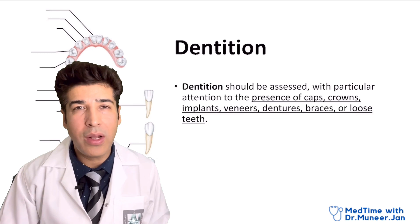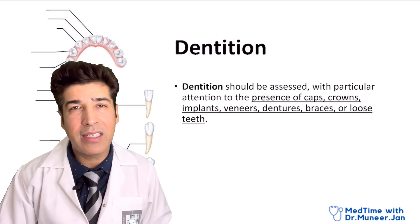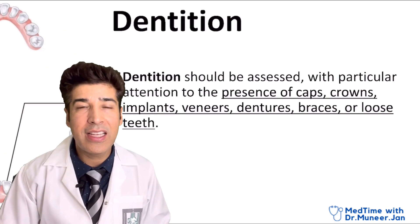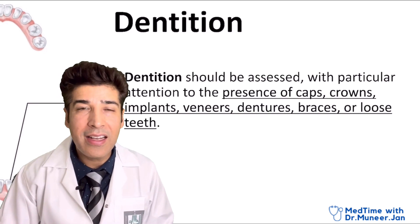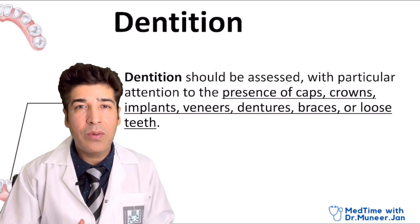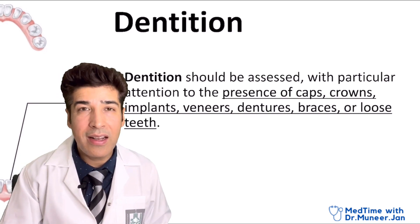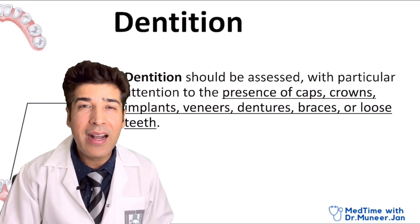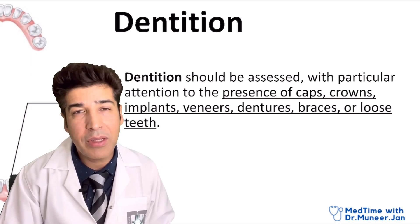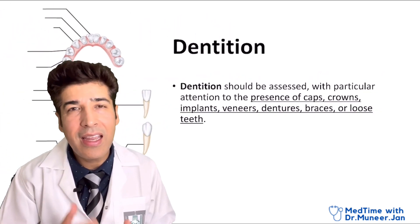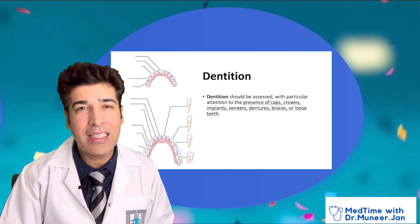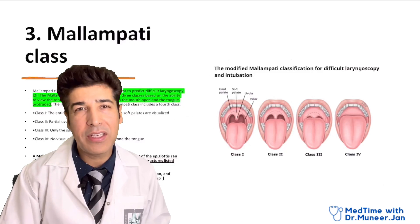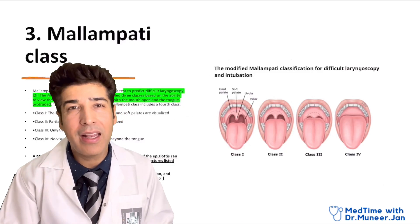Next, assess the dentition. Check for the presence of crowns, artificial dentures, or whether the patient is edentulous. If the patient is edentulous, there is possibility of difficult mask ventilation and endotracheal tube intubation. So dentition assessment is the second examination step.